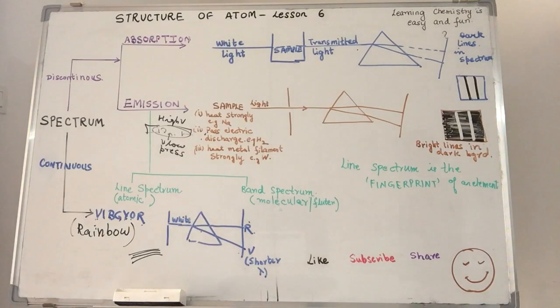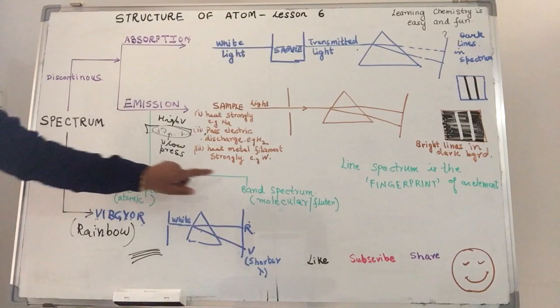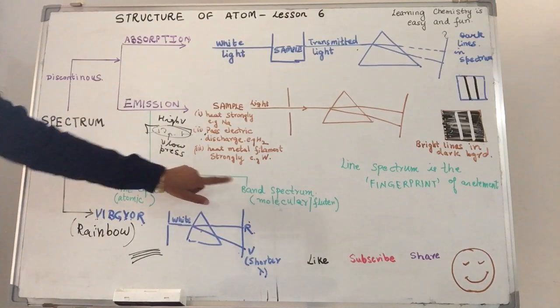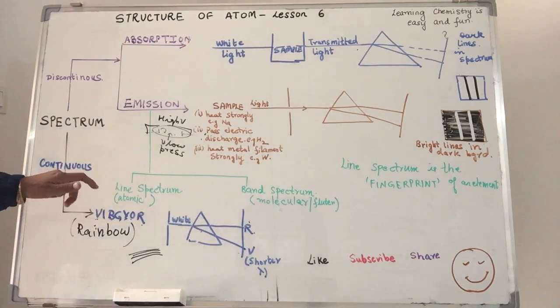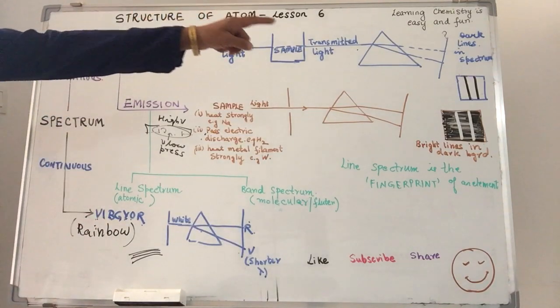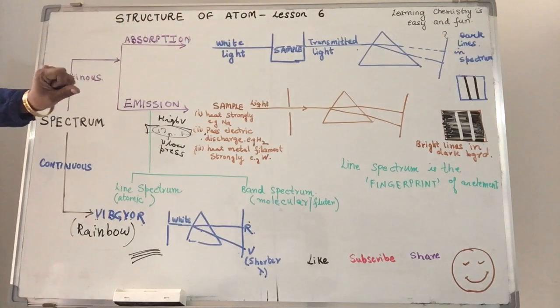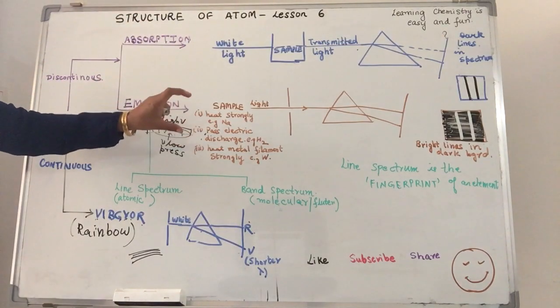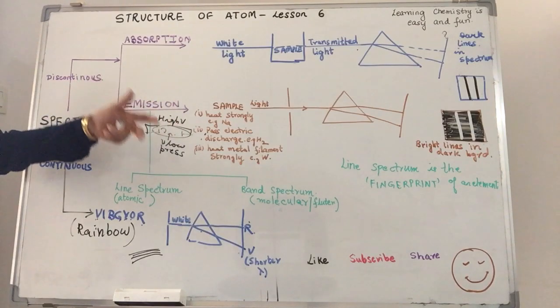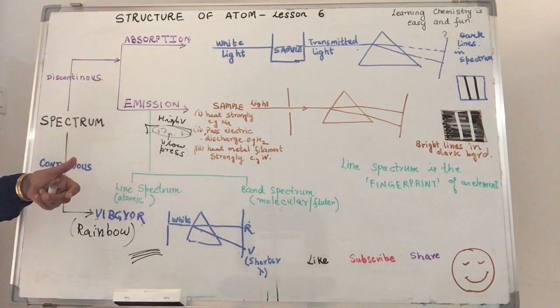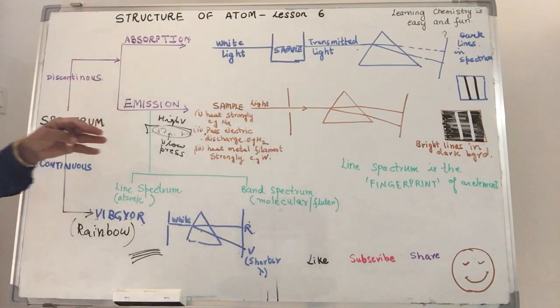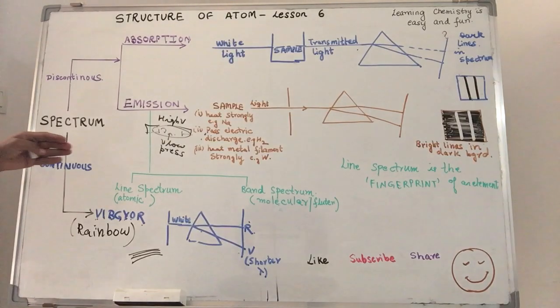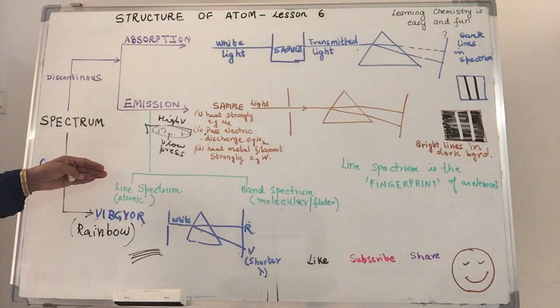Emission spectrum is further categorized as line spectrum and band spectrum. Line spectrum as the name indicates, the spectrum will have specific lines corresponding to the frequency of the light emitted by the sample that we have taken. Now if you understand over here, this is a characteristic property. So absorption or emission is a characteristic property of a specific element.